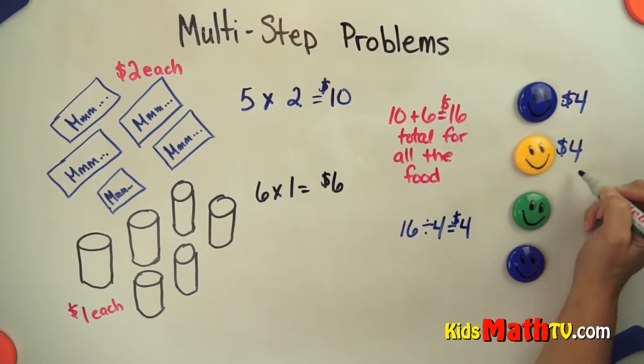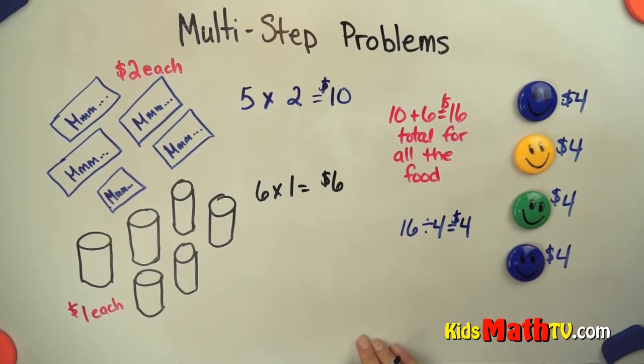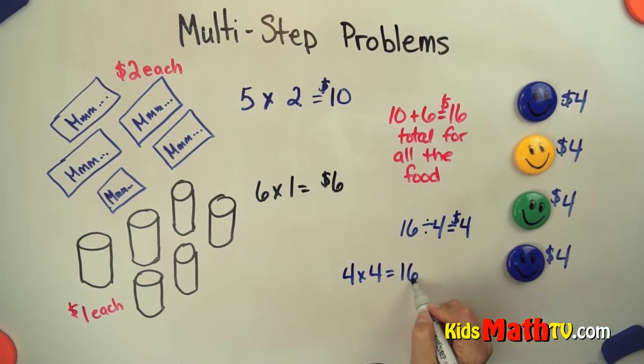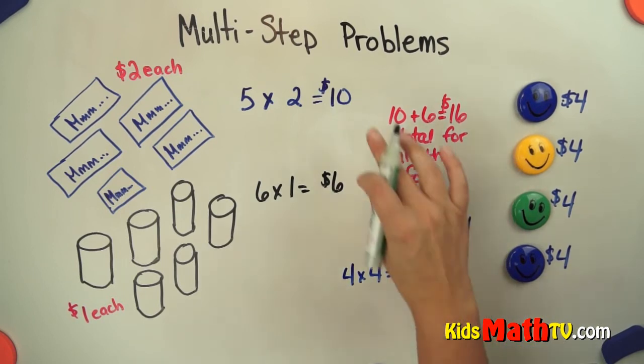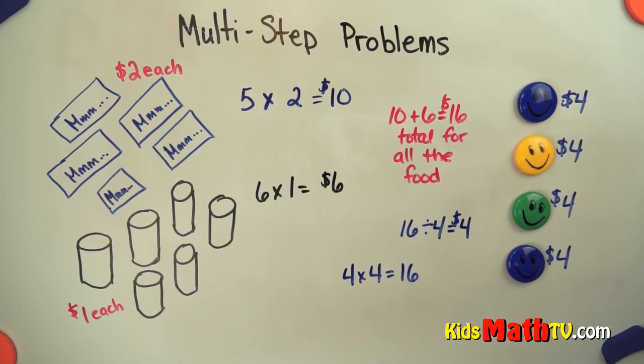And we can check: 4 times 4, which is $16 that they need. $10 for the candy bars, $6 for the sodas.